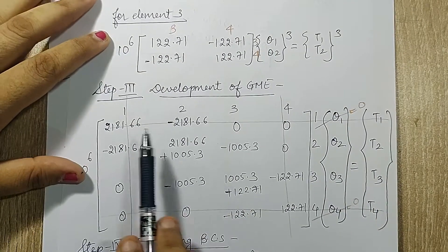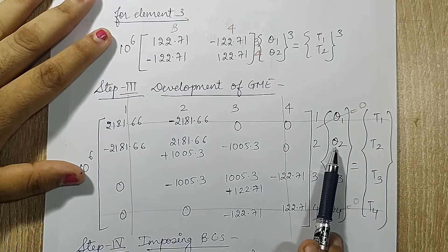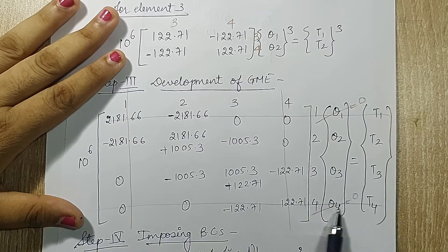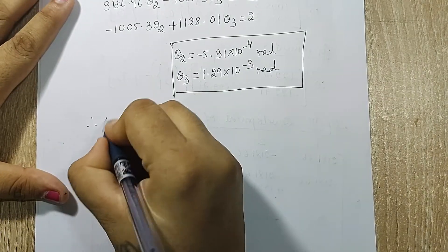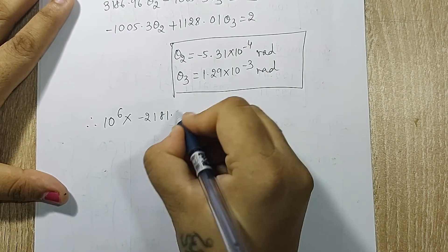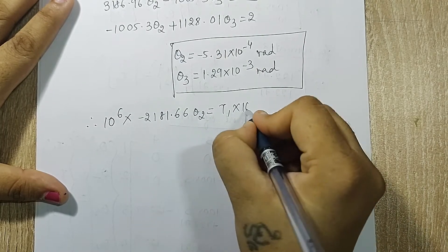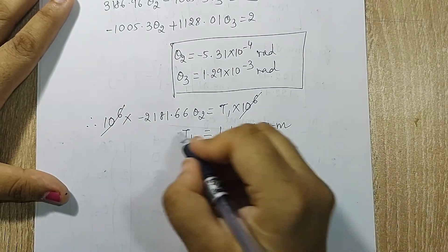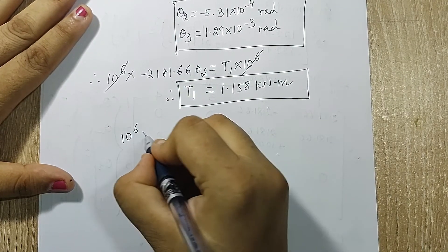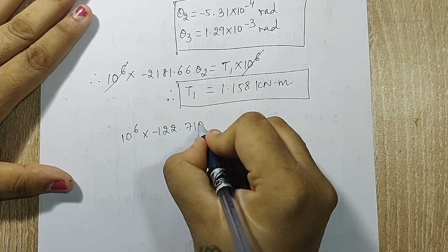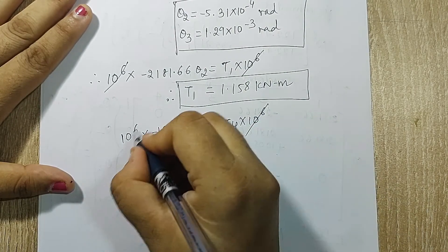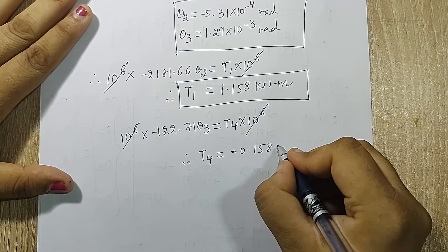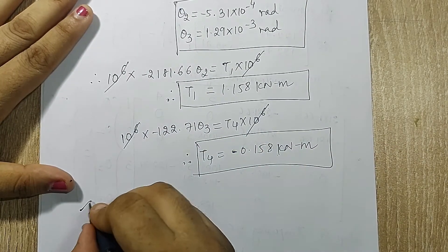Revisiting the full equation, for the first row: theta 1 is 0, so only theta 2 remains, giving t1. For the last row: theta 4 is 0, so the relevant term with theta 3 gives t4. Therefore, 10 raised to 6 times minus 2181.66 times theta 2 gives t1. After 10 raised to 6 cancels, t1 equals 1.158 kilonewton-meter. For t4, the equation gives minus 0.158 kilonewton-meter.